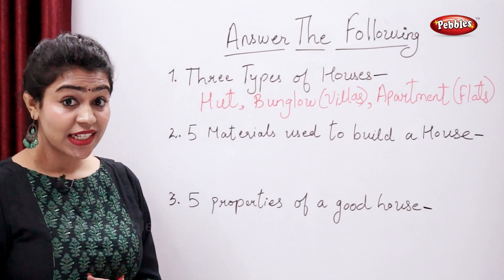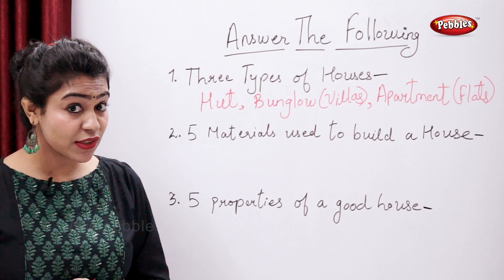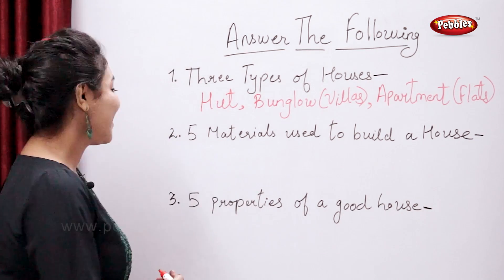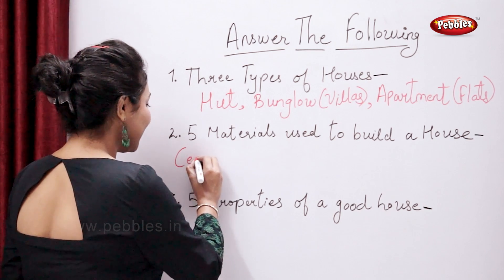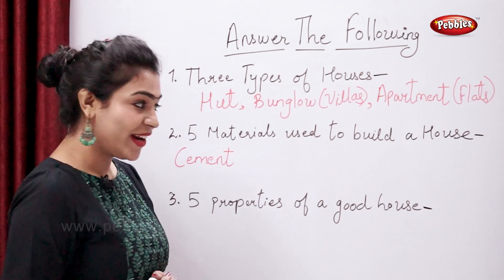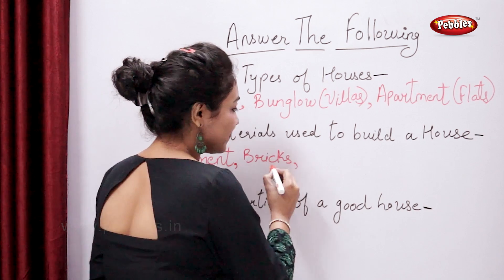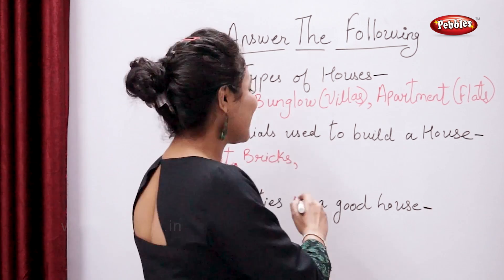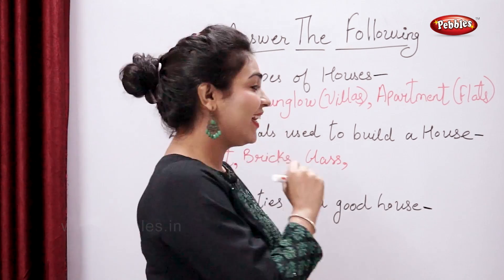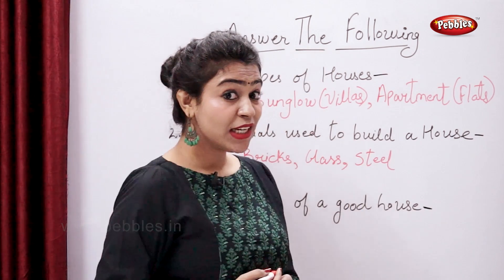Great. So now tell me five materials used to build a house. Think and tell me. Right: cement and brick, glass, steel, and wood.